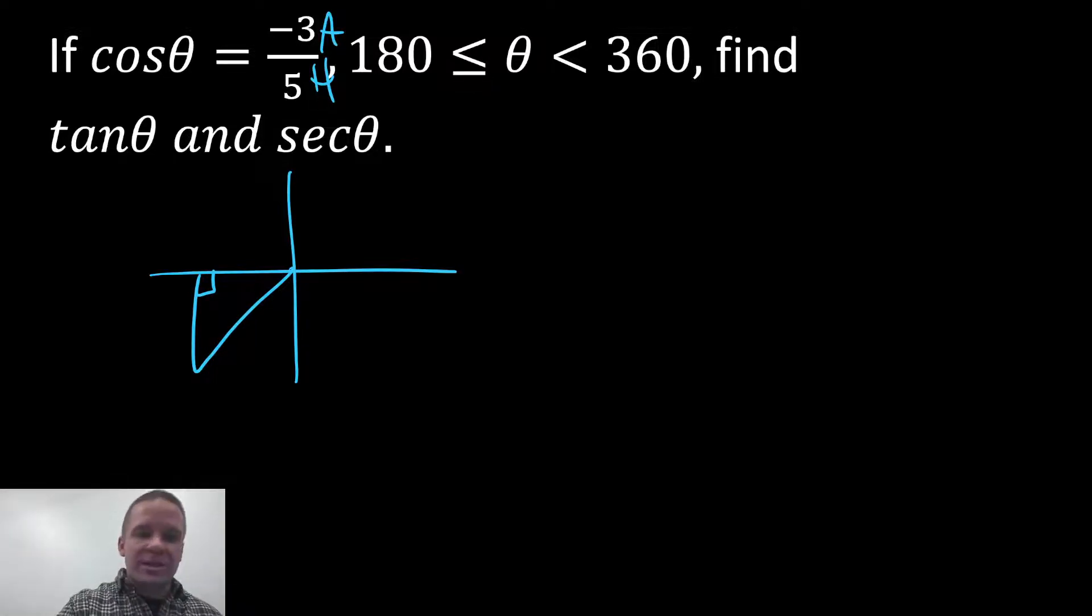My adjacent is negative three, and my hypotenuse is five, and then I would know that my opposite is going to be a negative four. It's going down, and it's a three, four, five triangle.